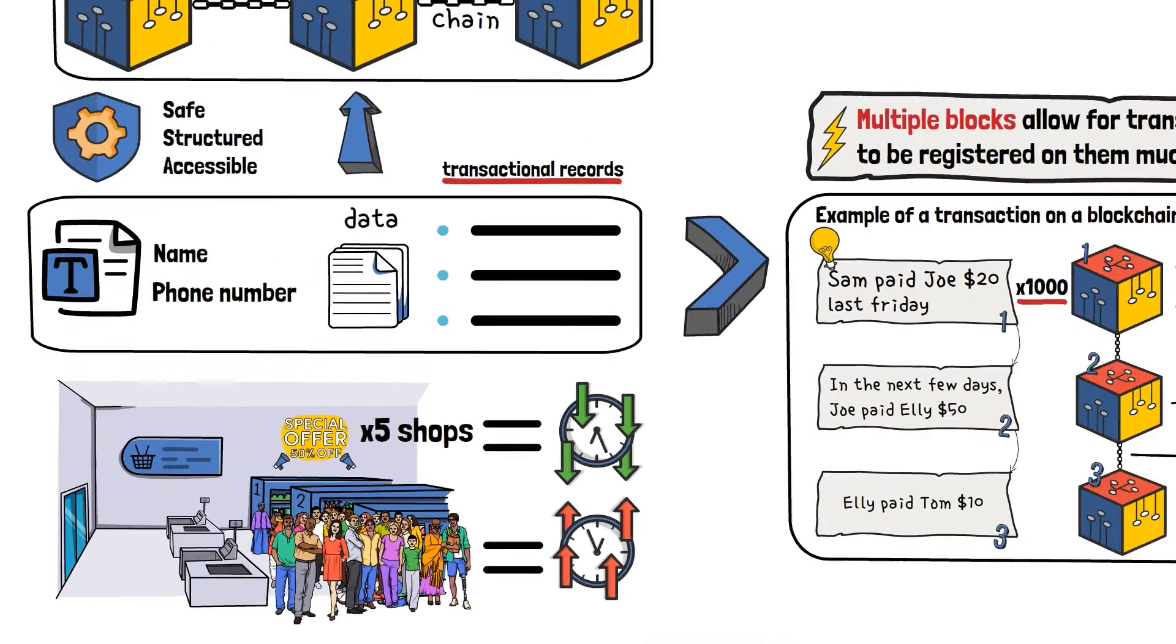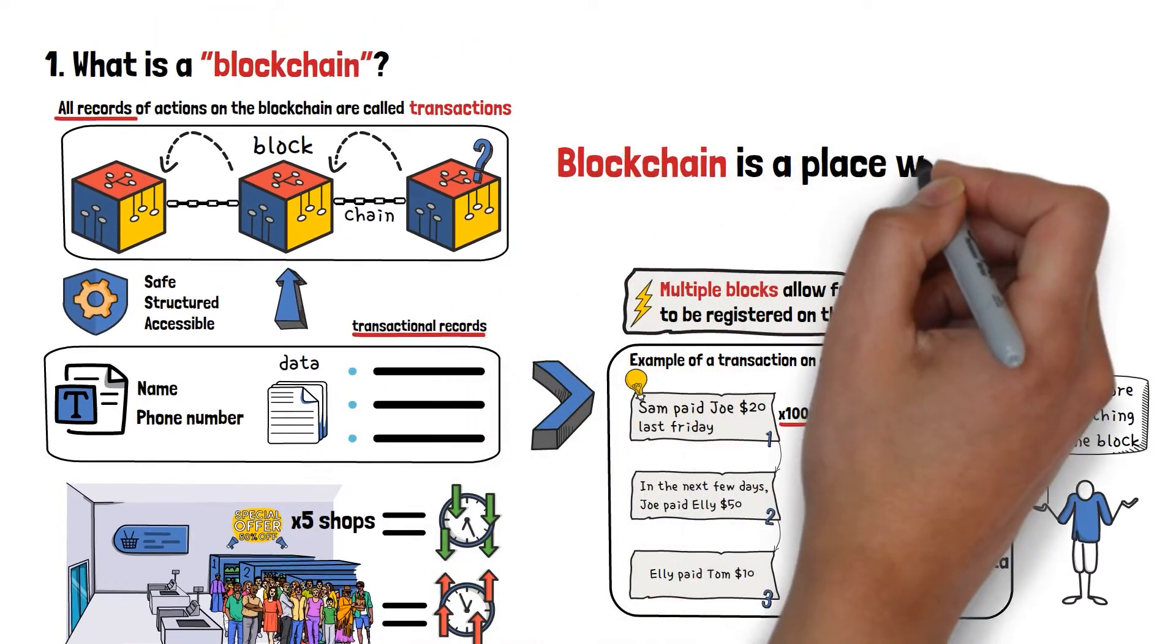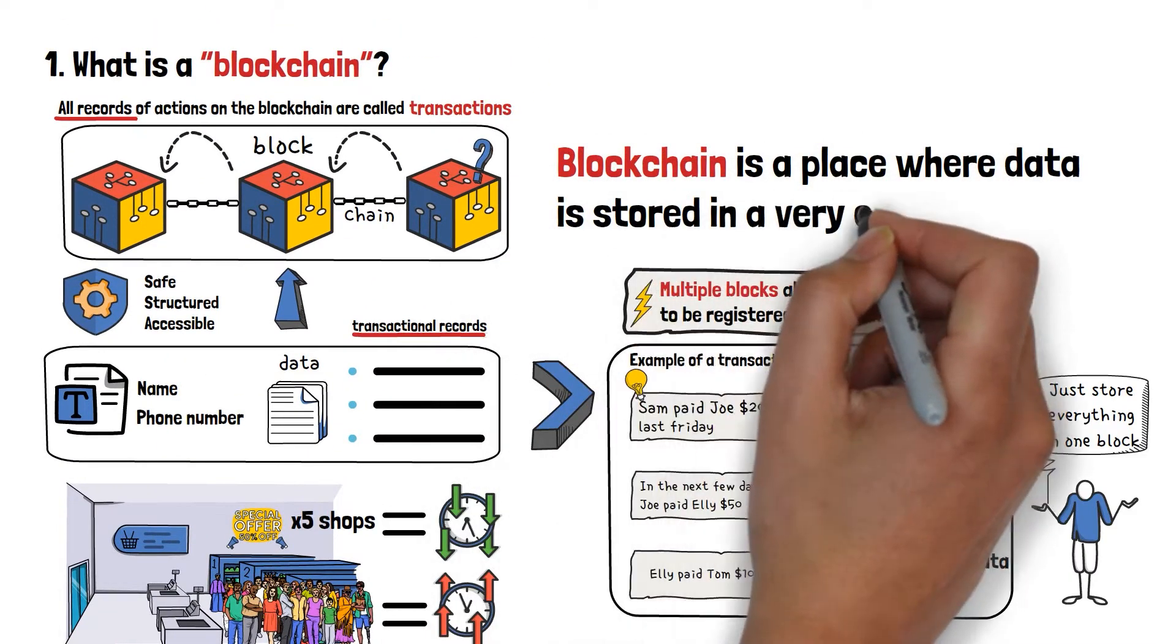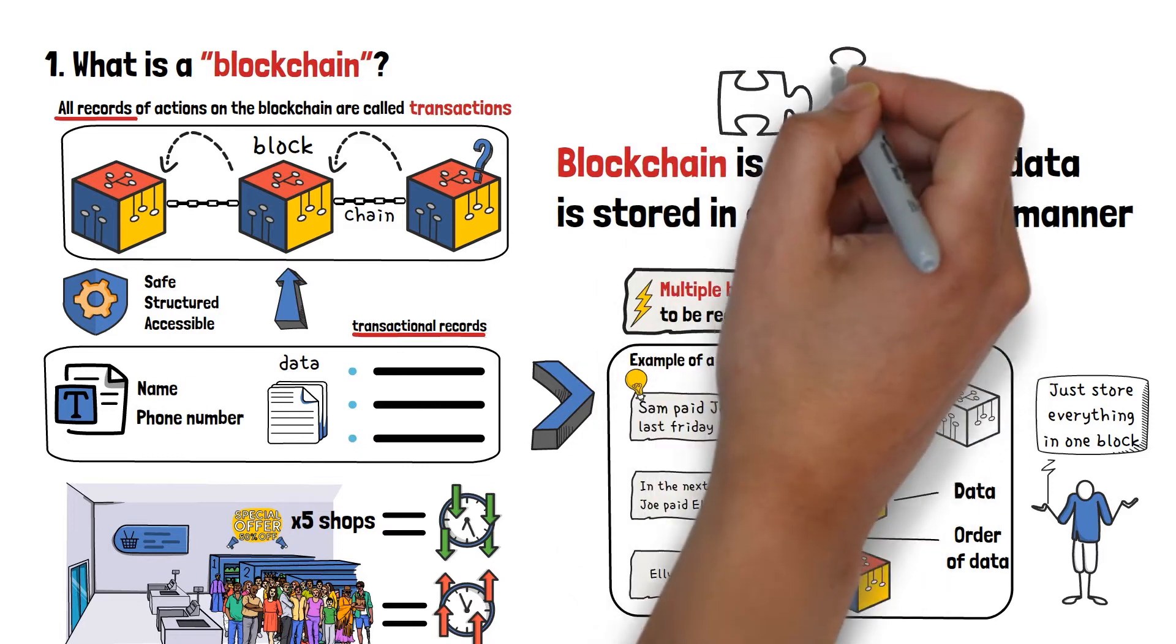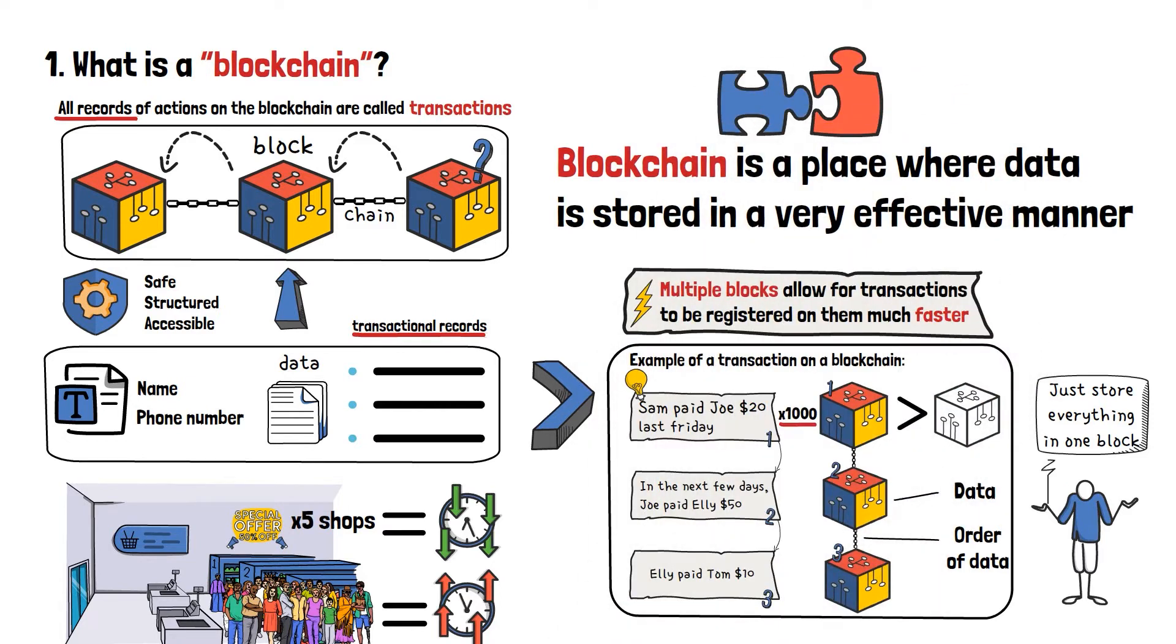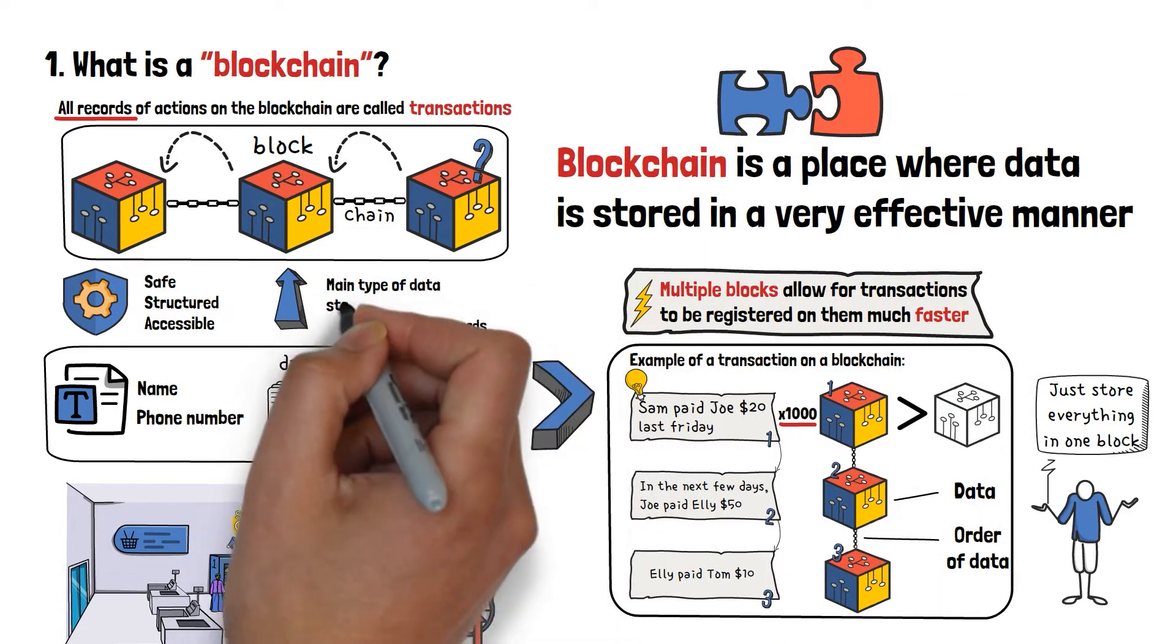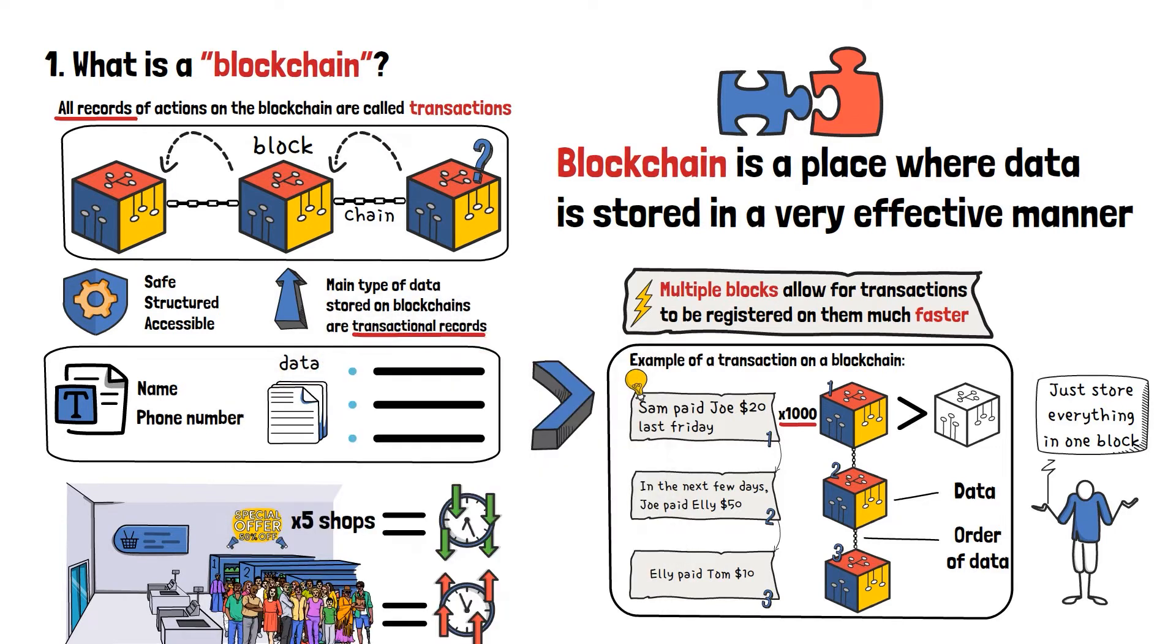So, to recap, a blockchain is simply a place where data or information is stored in a very effective manner. This information could refer to many different things, but for the sake of keeping the learning curve simple, let's just say that the main type of data stored on blockchains are transactional records.